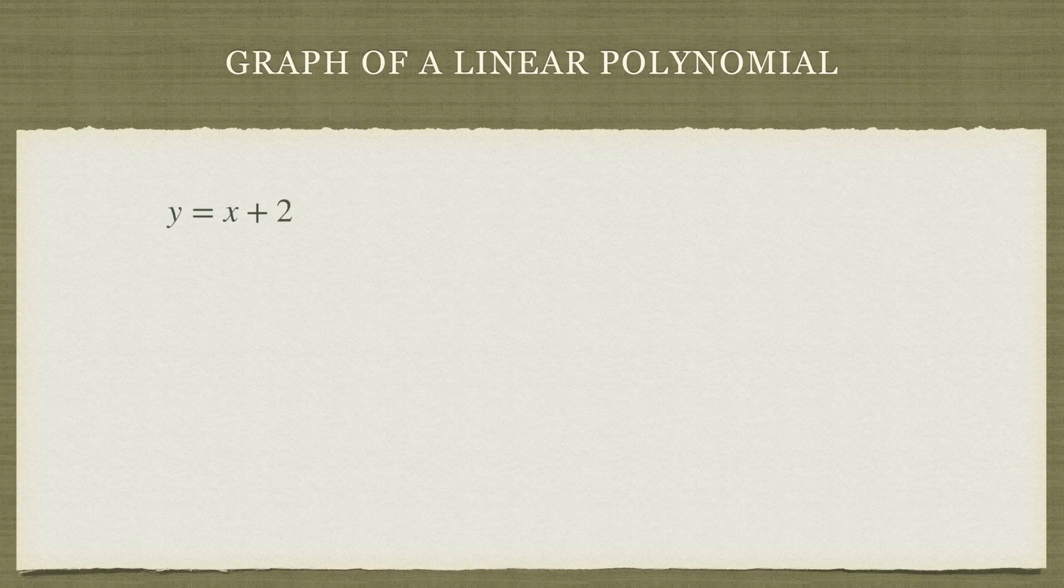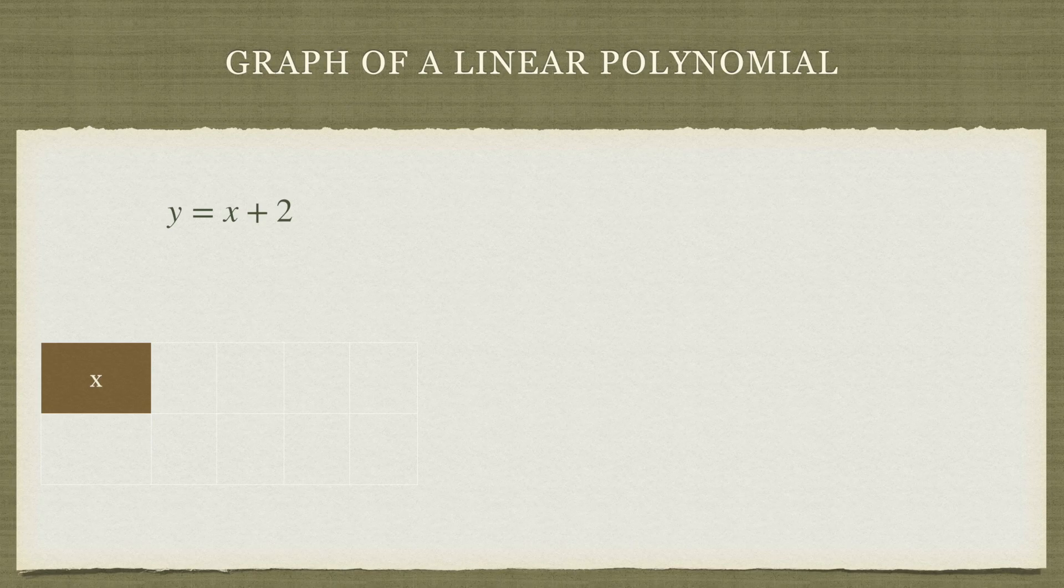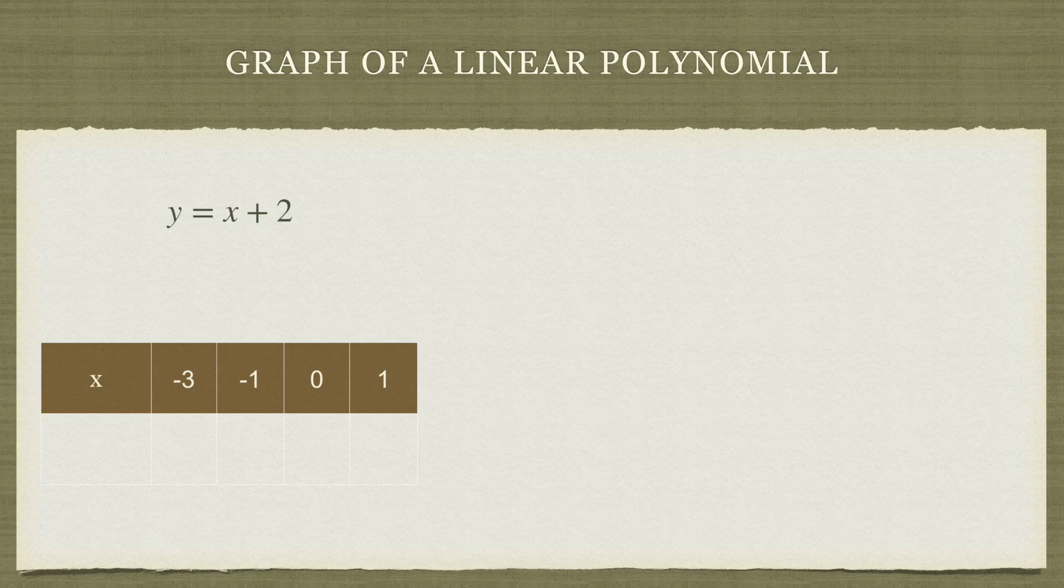Here we have written a linear polynomial y = x + 2. This is an arbitrary linear polynomial. Now we want to graph this polynomial. How do we do that? We are going to take some values of x. These are arbitrary values, so here I have taken -3, -1, 0, and 1.